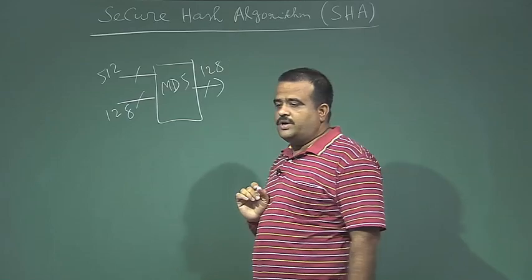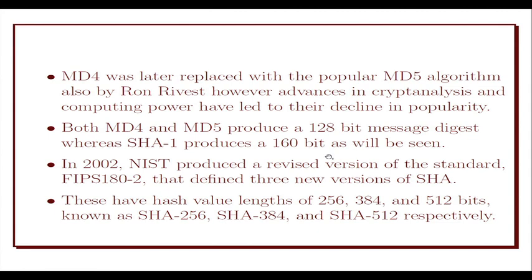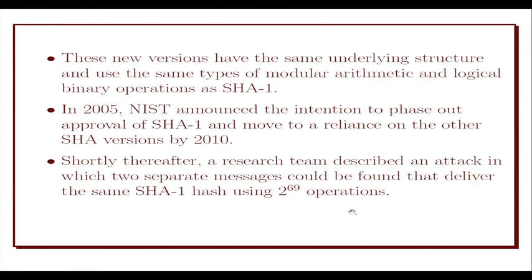Since SHA-1's hash code is 160 bits — it takes arbitrary length input and produces a 160-bit output — we need to extend and revise MD5. There are several versions: SHA-256, SHA-384, SHA-512, and so on.